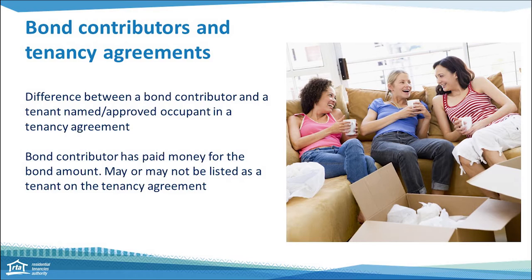It could also be that a parent has paid the bond on behalf of their family member and they are not on the tenancy agreement but they are the person who paid and has ownership of the bond. So it's important that any changes regarding the rental bond are reported to the RTA so we can amend our records and ensure the listed contributors at the start match those at the end when refunding the bond. Any changes to the tenancy or rooming agreement need to be agreed between all parties including the property manager or owner.